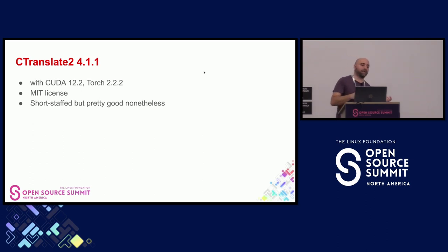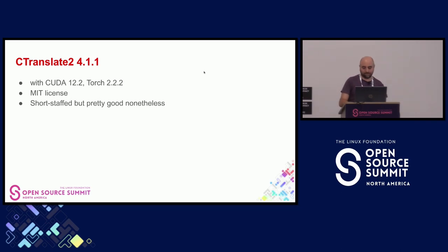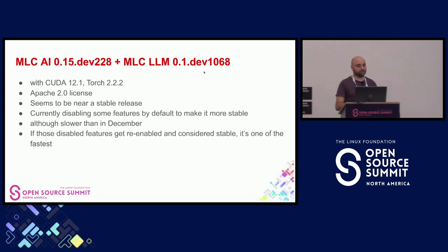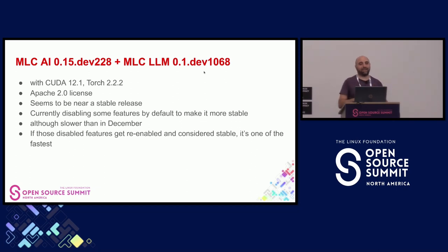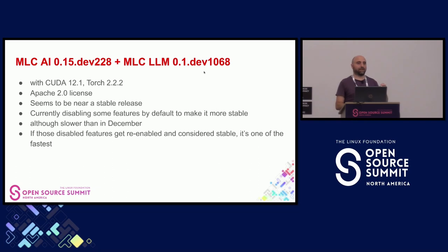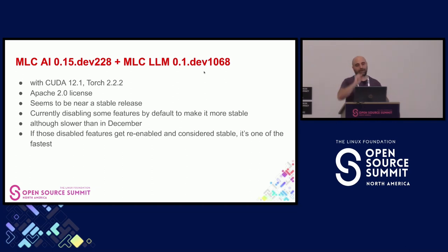Then there's MLC — something a bit experimental but an interesting project that's getting mature. From December to April they changed their name and we had to re-adapt all the benchmarks. Now it seems stable. They also have an optimization level selector: the default is stable, and you can enable higher levels like O3 for more optimization — similar to compiler flags — but they say those optimizations are experimental, so be careful. It got a bit slower than in December, which was strange, but it could be one of the fastest projects if you enable all optimizations.